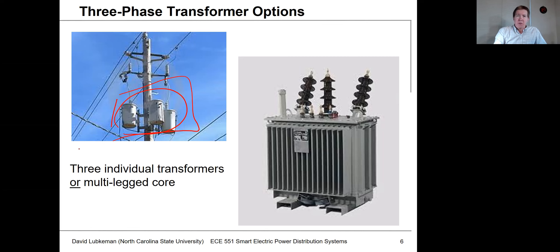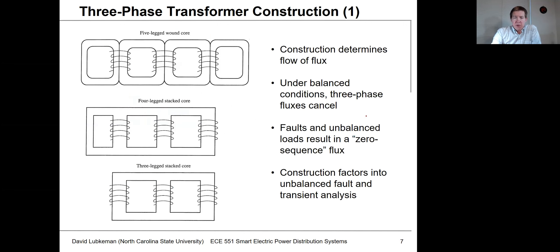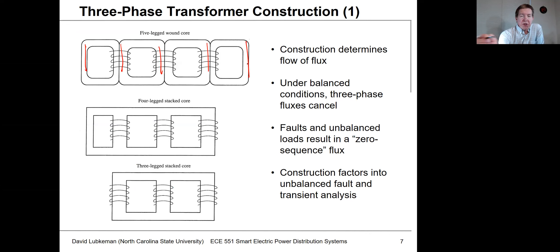In a lot of situations, space is more of a consideration, so we would have the three-phase transformer encased in a tank with different types of core designs. The core designs shown here include five-legged, four-legged, and three-legged cores. The leg corresponds to the leg of the ferromagnetic material — you can see five legs, four legs, and three legs respectively in the diagrams.